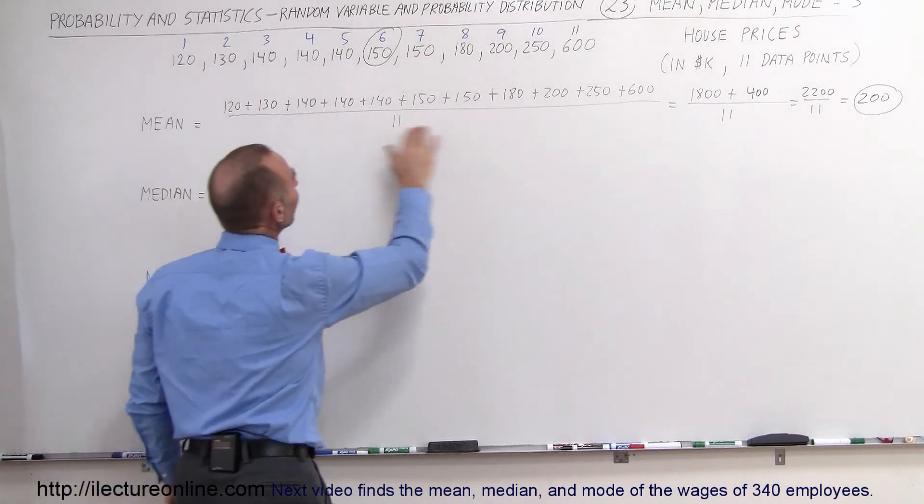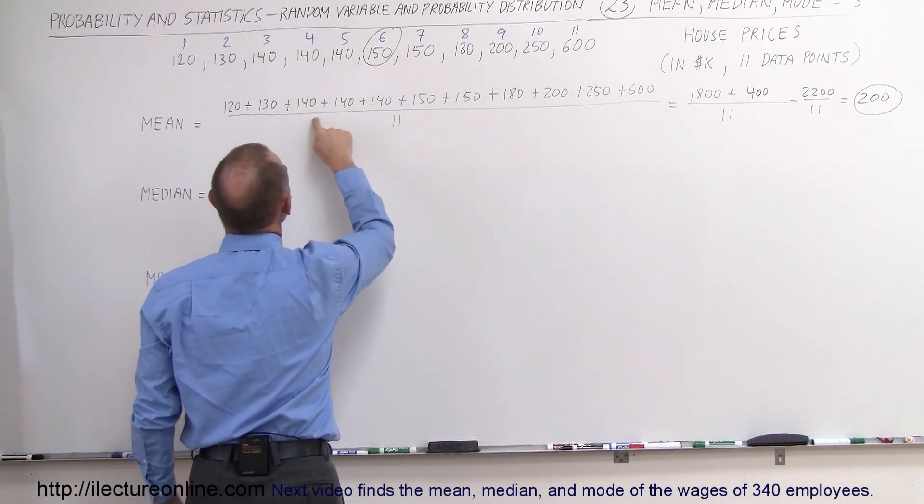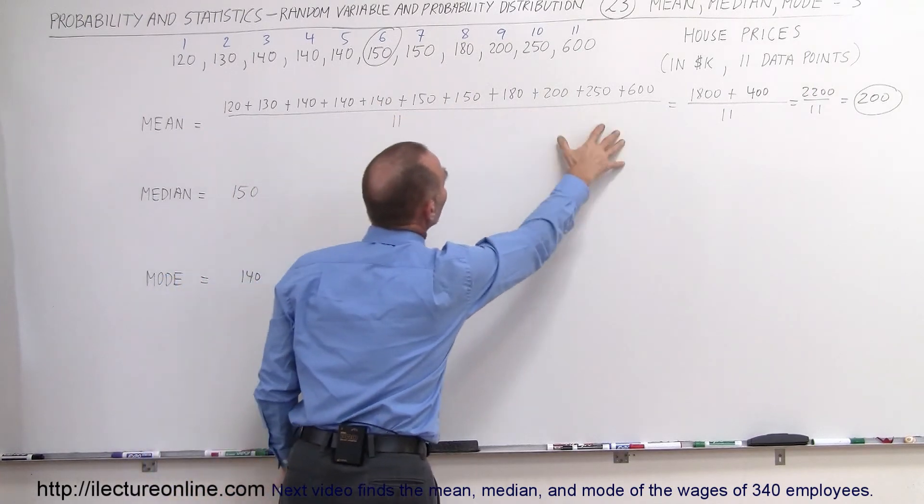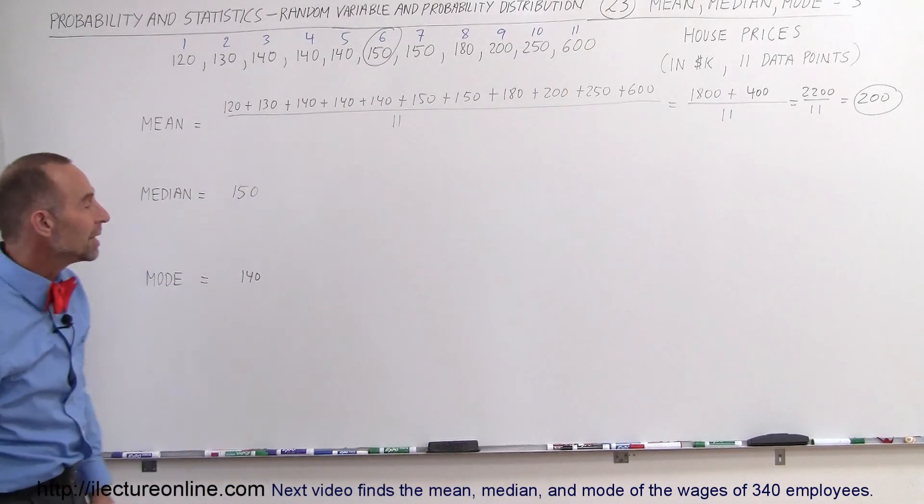Because notice that out of the 11 houses sold, one, two, three, four, five, six, seven—seven houses were at the median price or cheaper, and only four were higher than the median price.